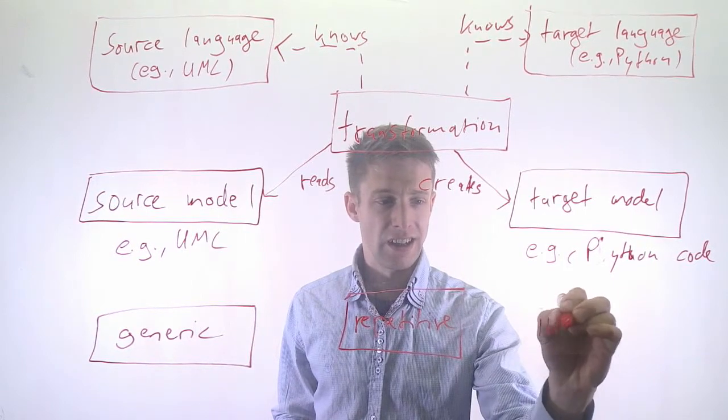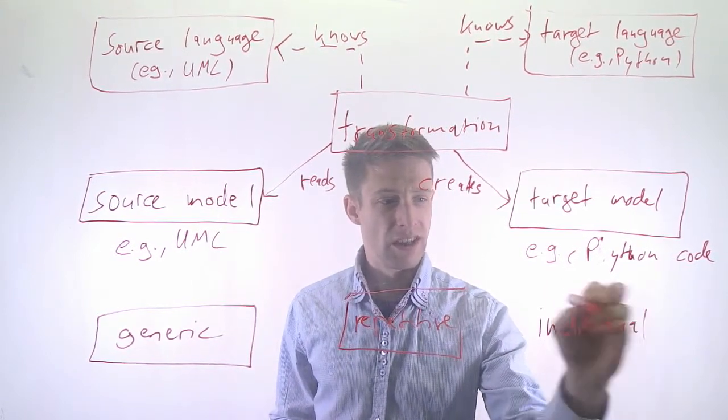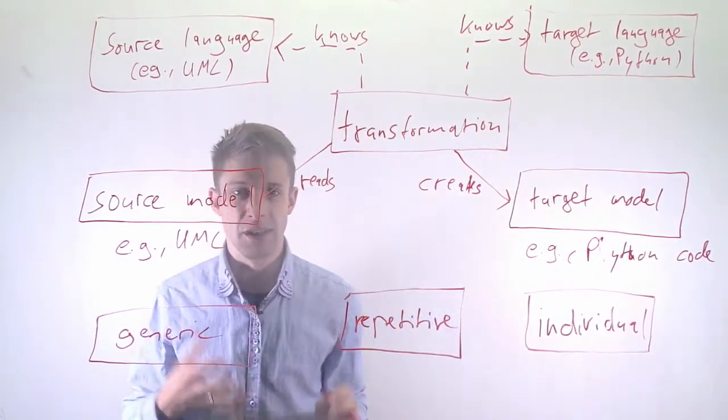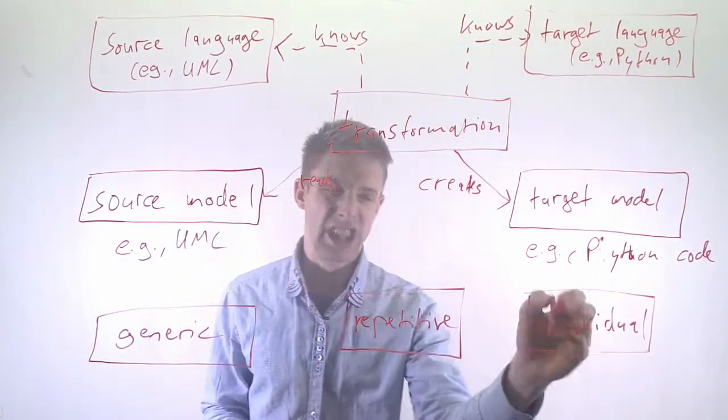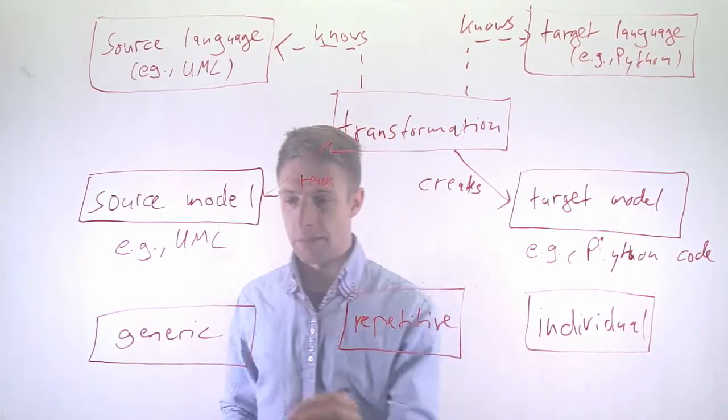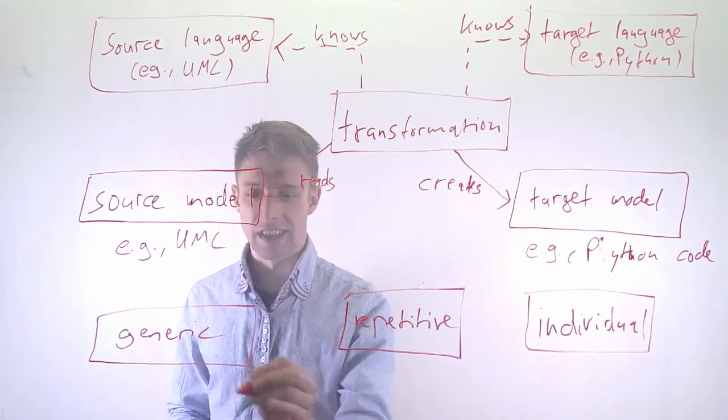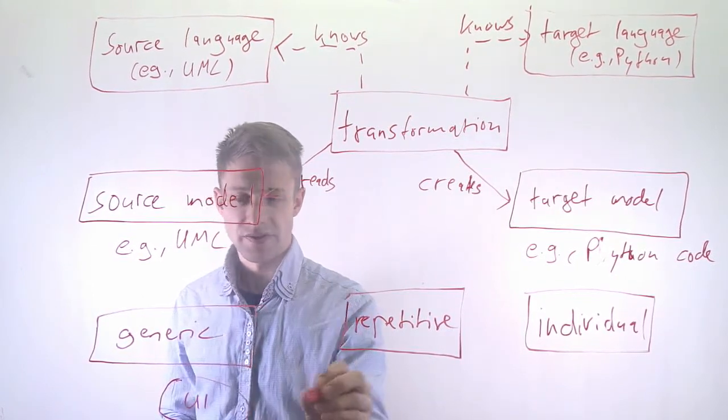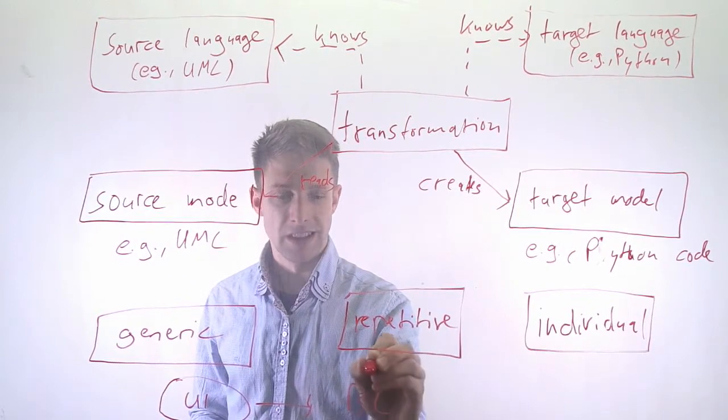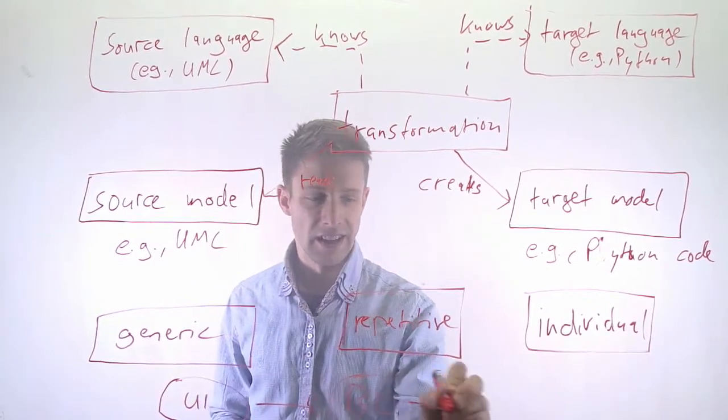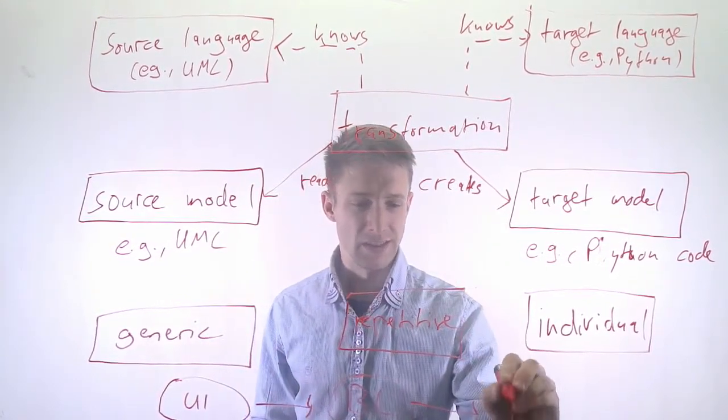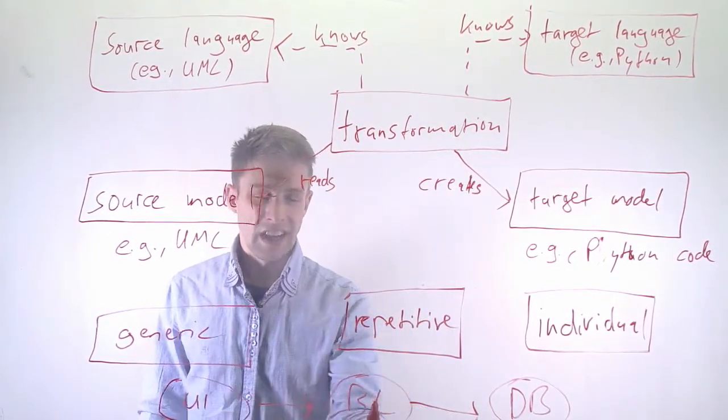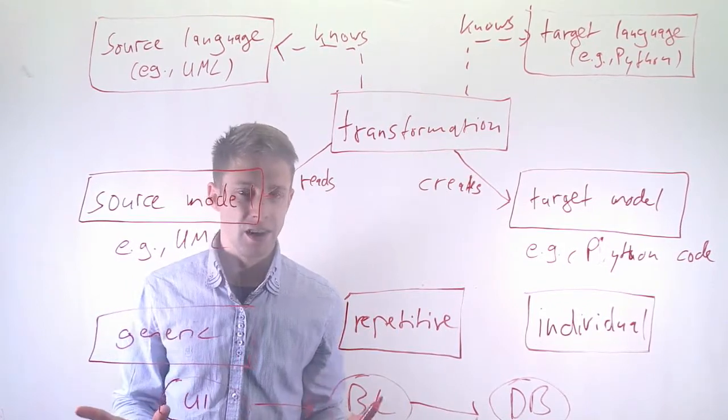And then finally, you do have your individual code. And that's really the thing that is very application specific where it maybe is not that easy to generate it from somewhere else. So if you take an example, if you have, for example, a three layer architecture and we would have the UI layer that then talks to the business logic layer that then talks to the persistence or let's say the database layer.